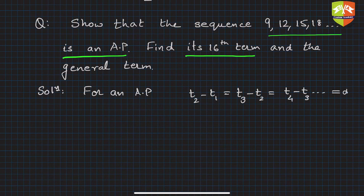Okay, so let's find out. If you see, t2 is equal to 12, right? And t1 is equal to 9. So t2 minus t1 is 12 minus 9, which is 3.